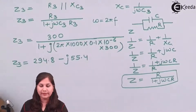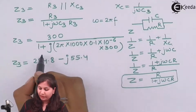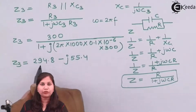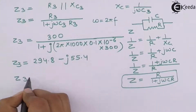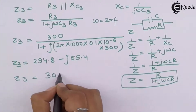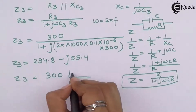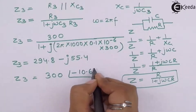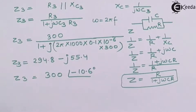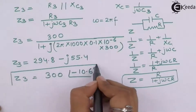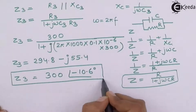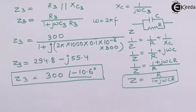Converting to polar form by finding the magnitude and phase angle of this complex number, Z3 comes out to be 300∠−10.6°.